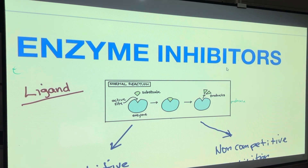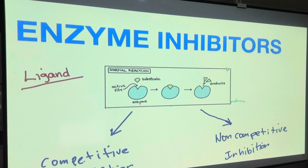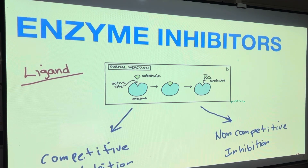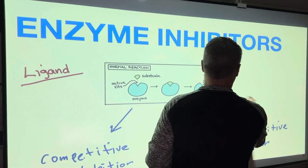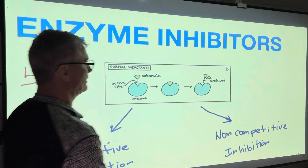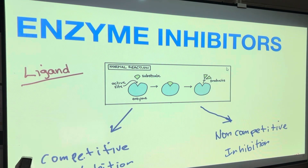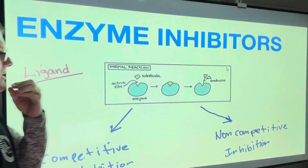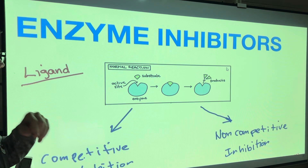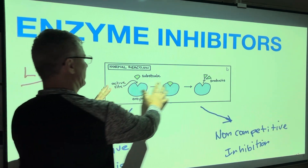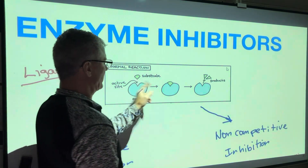We're going to finish up section 3.3 and talk about enzyme inhibitors. We already know what an enzyme is — we've been talking about it for the last week or so. We need to look at what the word inhibitor means: an inhibitor is something that stops. Like if a door is closing and you stop it, you're inhibiting it.